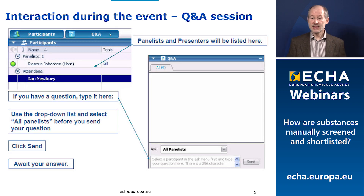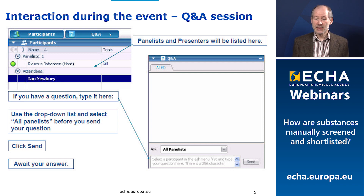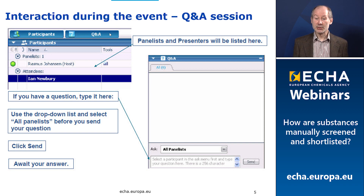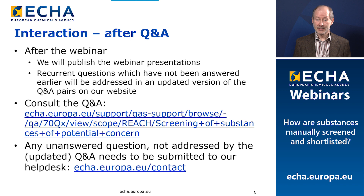To submit a question in practice, in the bottom right corner of your screen you find the Q&A panel. If you click it open you find the free text field where you can type your question. Please note that you need to select from the drop-down list the option 'all panelists' before you send your question. If we get lots of questions it may take some time before we are able to answer, so be a bit patient.